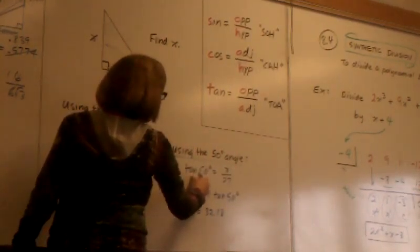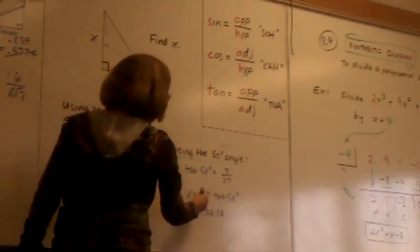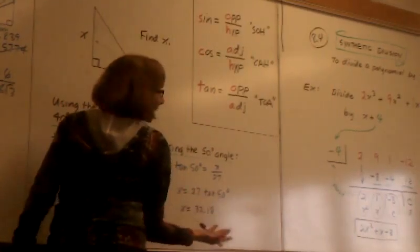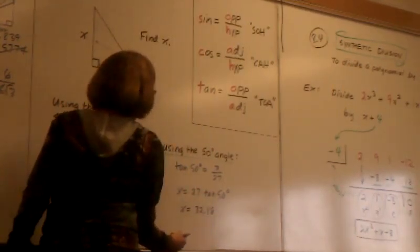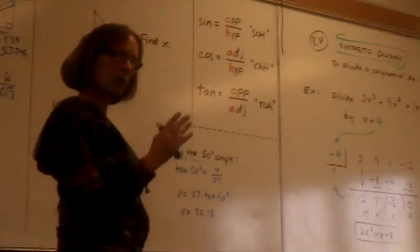Using the symmetric property, I can switch the left and the right side because I like having x on the left. So x is 32.147. Got that?